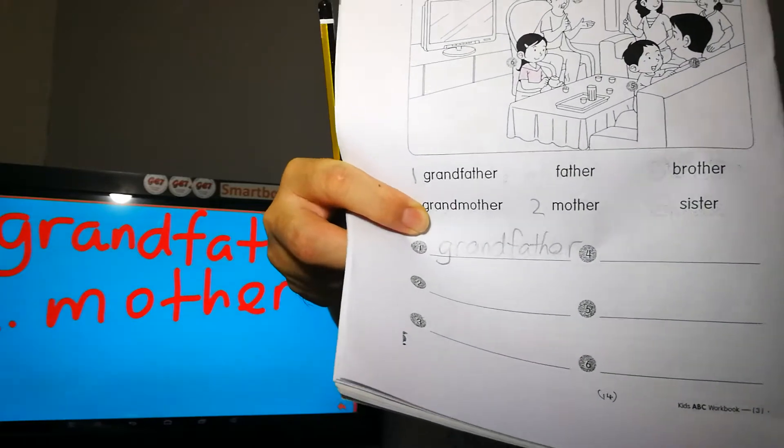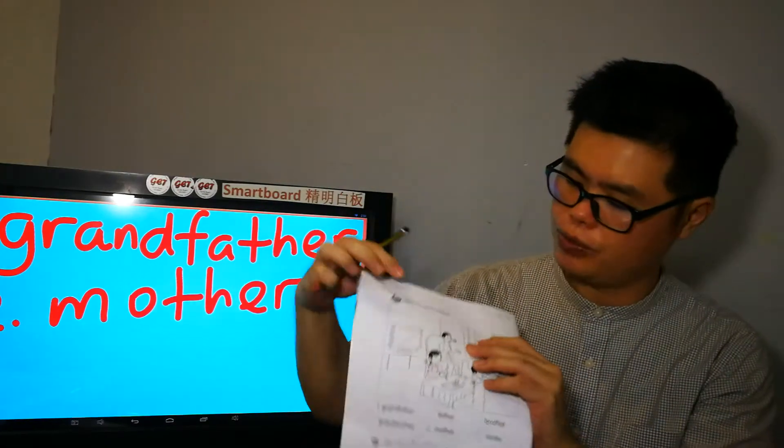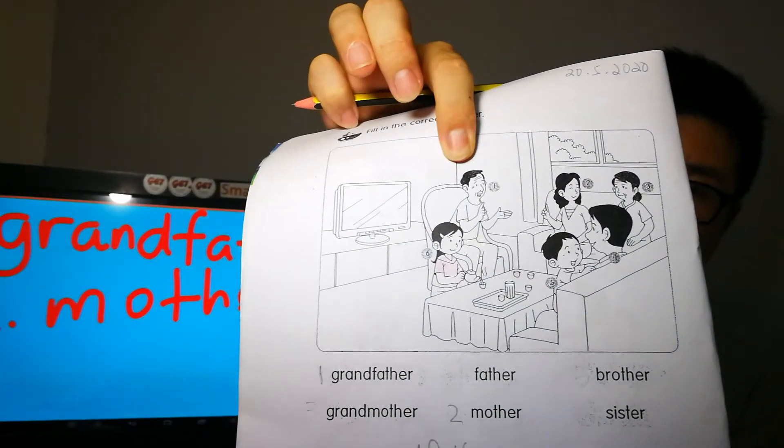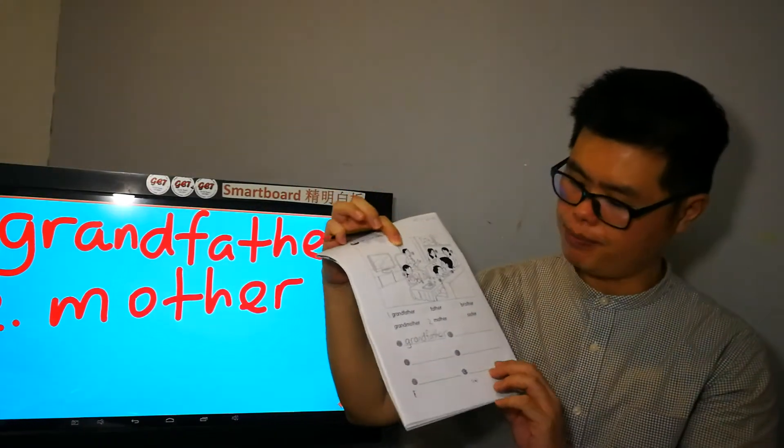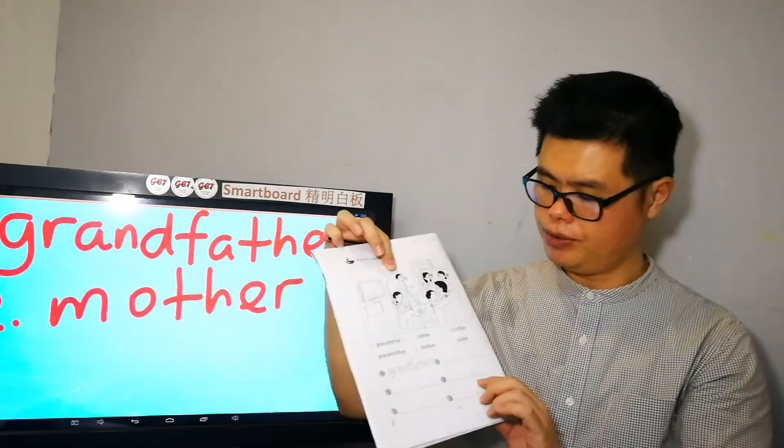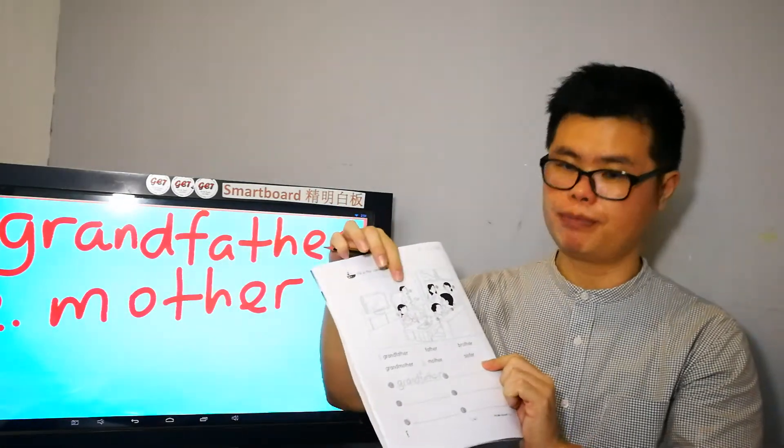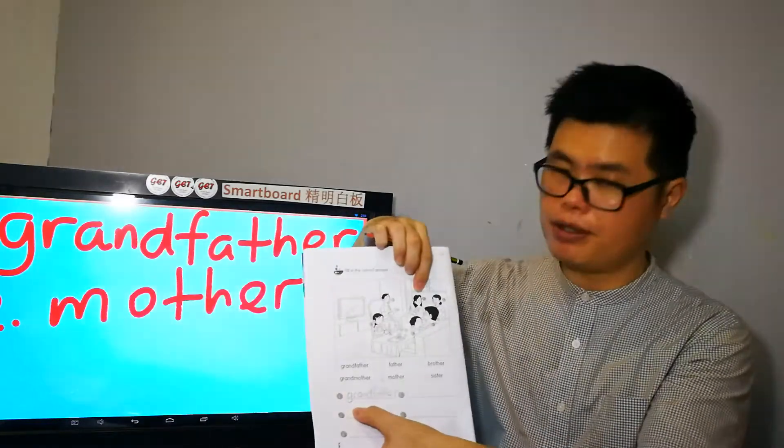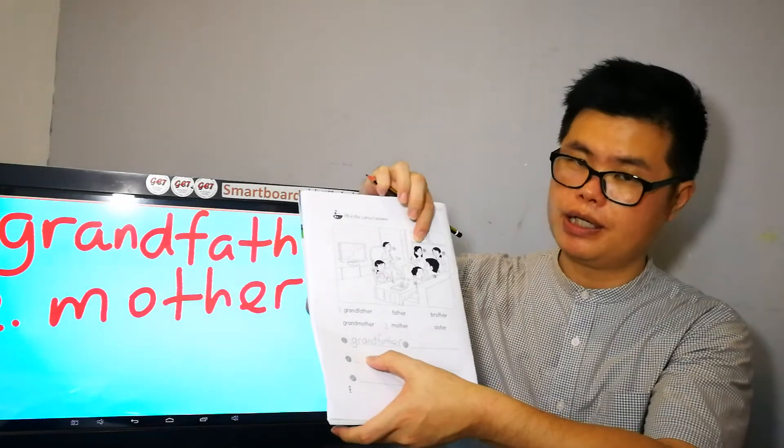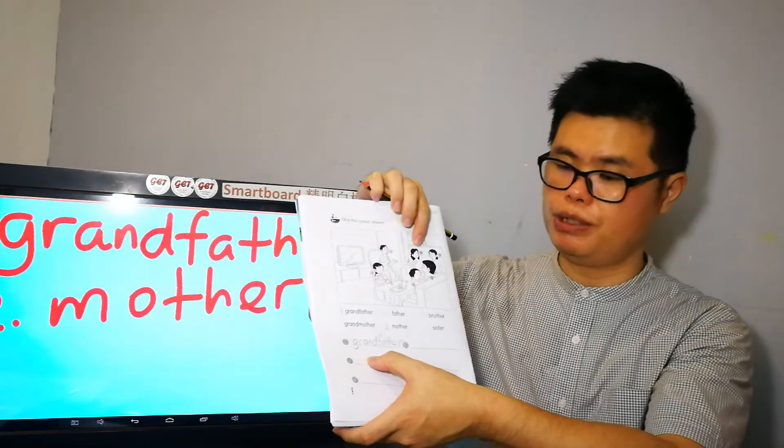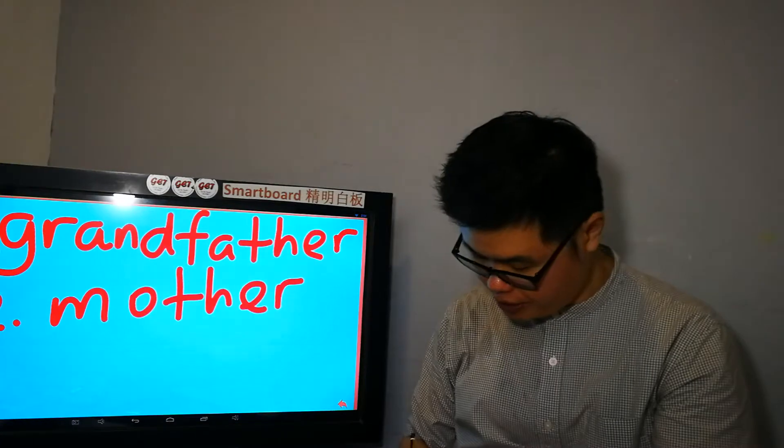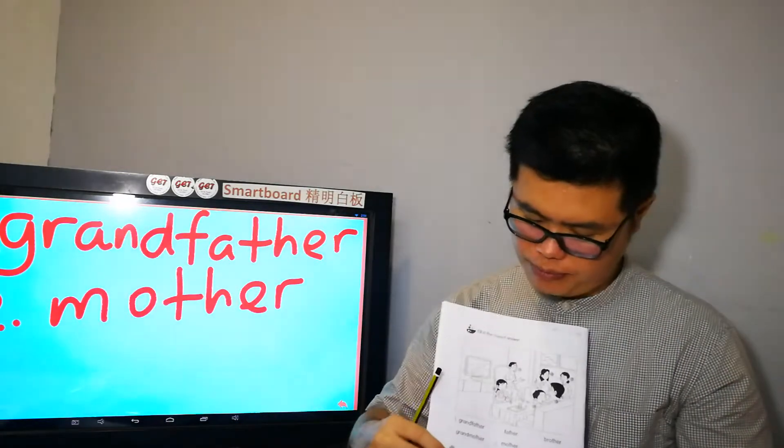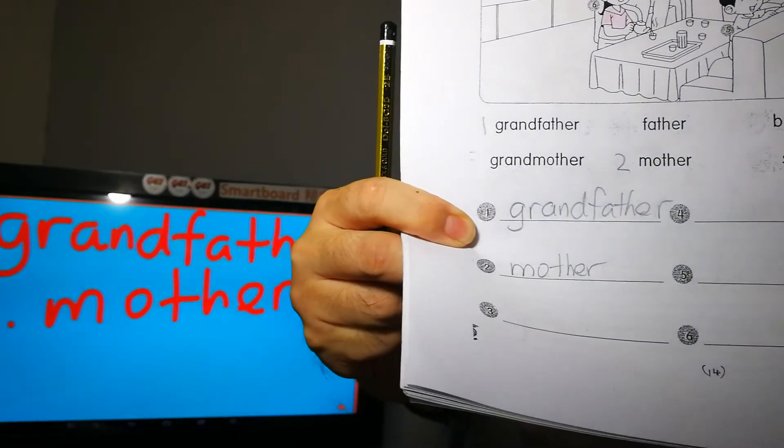Grandfather. Grandfather. Gotoh. 公公. Tato, eh? Nombor satu, eh? 爸爸的爸爸 or 妈妈的爸爸. 有些是通常是爸爸的爸爸住在一起. 對不對? 二號呢, 是 mother. Mother. Mother. Ibu. Ni nombor dua. Ibu eh. Mother. Please write it down.